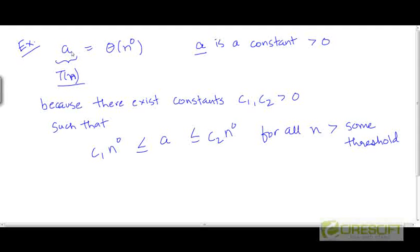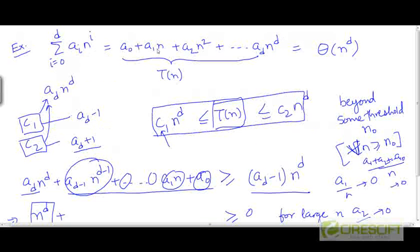Well, we can claim that in this case T is theta n to the power 0. We can arrive at this by replacing d by 0. So if we have a degree 0 polynomial, it's going to be theta n to the power 0.